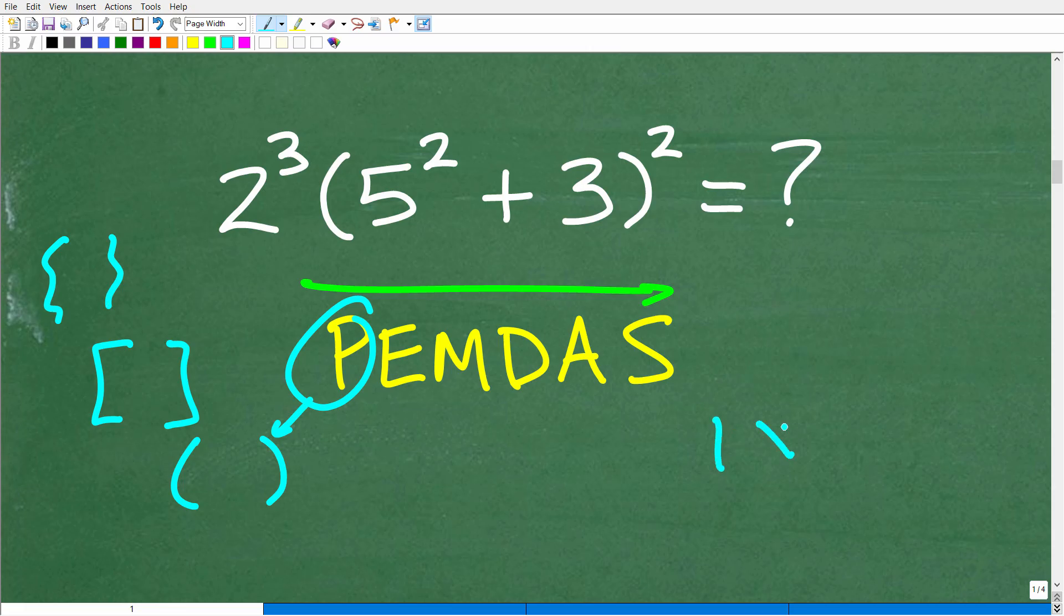In math, we have like one times seven divided by three. We can group this in different ways. If I put parentheses around one times seven, well, that's one problem. Or maybe I could put brackets around seven divided by three. Well, that's another problem. Well, okay, so that's what grouping symbols do for us in math.